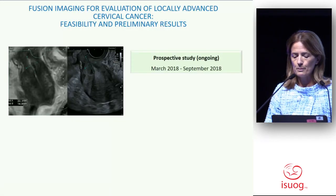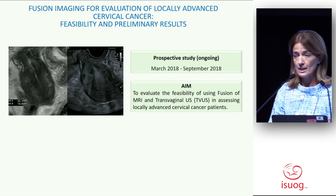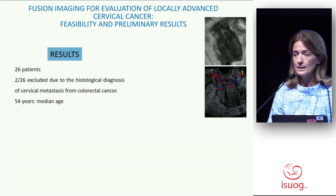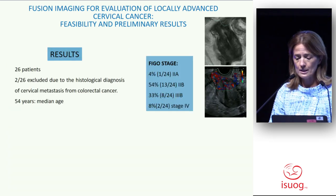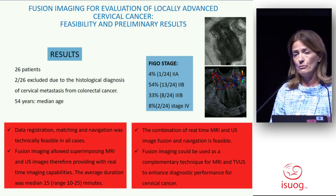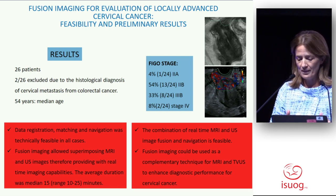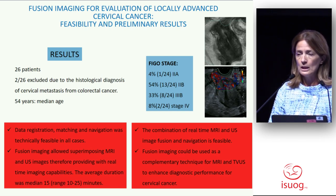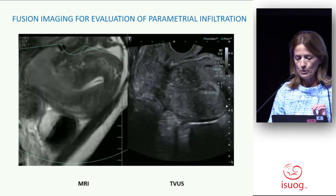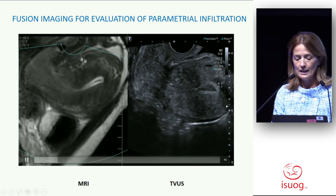In our prospective ongoing study, we aimed at assessing the feasibility of the method. We analyzed 26 patients with this FIGO stage, and we demonstrated that the combination of real-time ultrasound and magnetic resonance is feasible. The duration is about 50 minutes. In this patient, at magnetic resonance it was much clearer. The lesion was not so clear, quite unusual at grayscale on ultrasound.